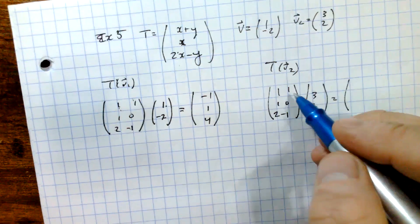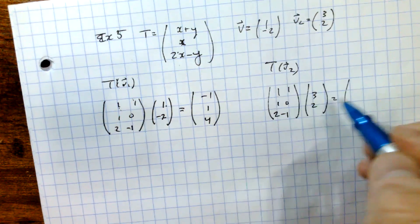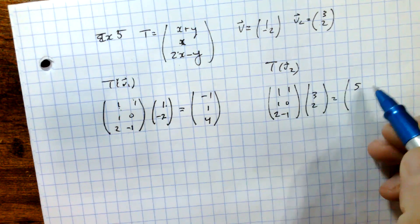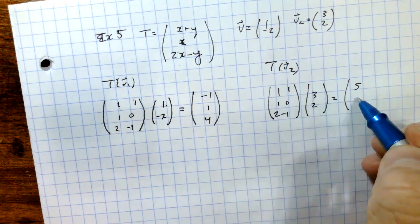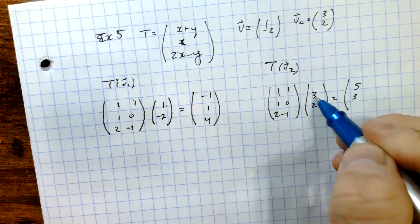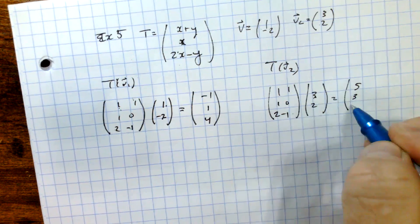And that's going to produce 3 plus 2, which is going to be 5. It's going to be 3 plus 0, so that's 3. And then that's going to be 6 minus 2, that's going to be 4.